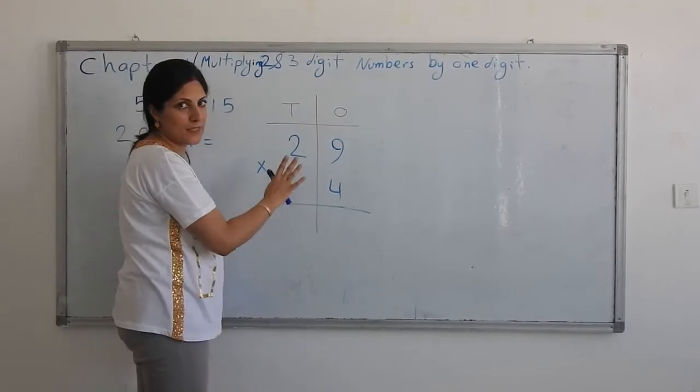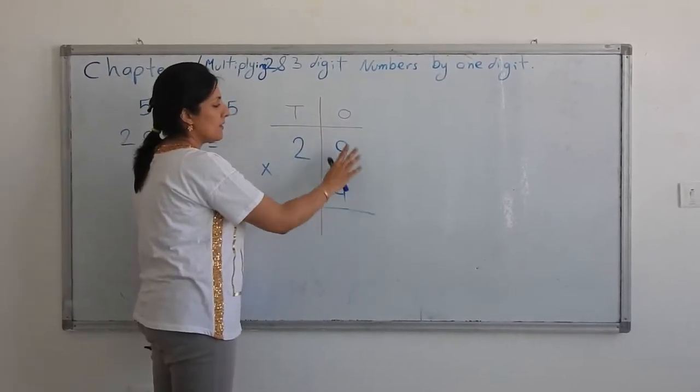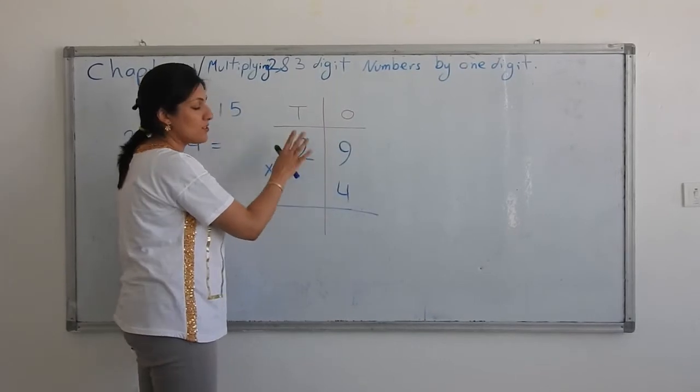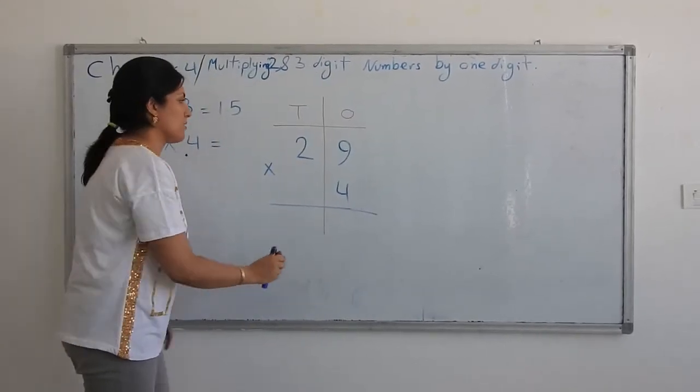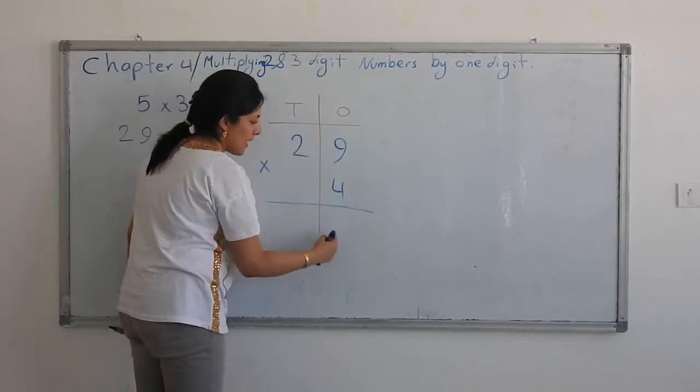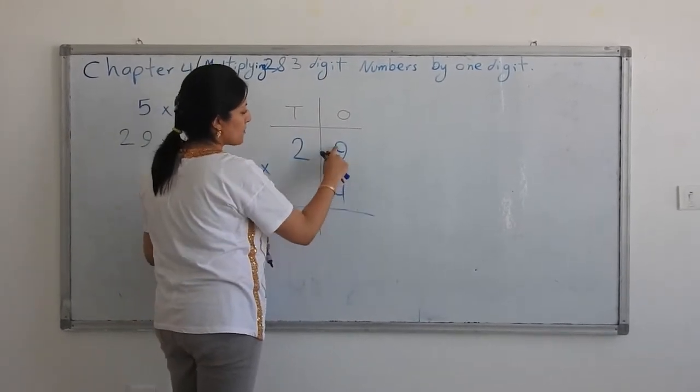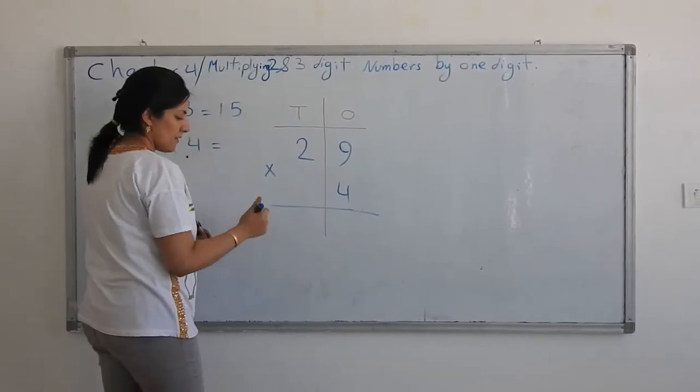Always for multiplication, addition, subtraction, everything, we start from 1s side, 1s house. So, start from 1s house, 4 times 9 is 36.